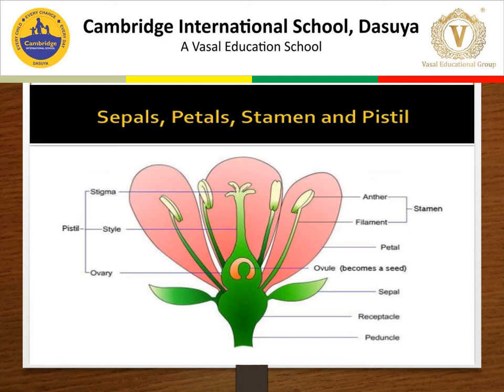Let's first discuss calyx. Calyx is the outermost whorl of the flower. It is formed of five green-colored leaf-like parts called sepals, and the function of the sepal is to protect the flowering bud. Now come to corolla. Corolla is also called petals. They lie just inside the calyx and are found in various colors. They attract insects for pollination.